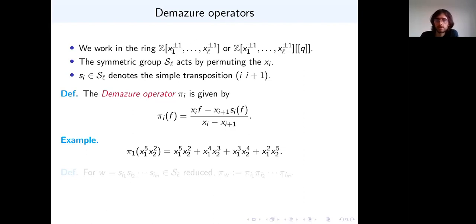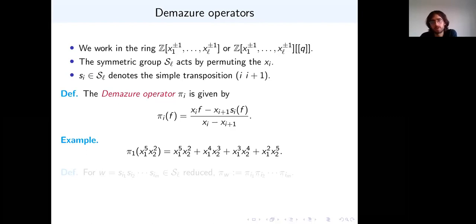So now let's get into some detail. These Catalan functions lie in the ring of Laurent polynomials in L variables, or sometimes we'll go to the power series ring. We have the symmetric group acting by permuting the variables. S_i denotes the simple transposition. We have this formula for what's known as the Demazure operator π_i: you act by S_i, which exchanges x_i and x_{i+1}, multiplied by x_{i+1}, and so on.